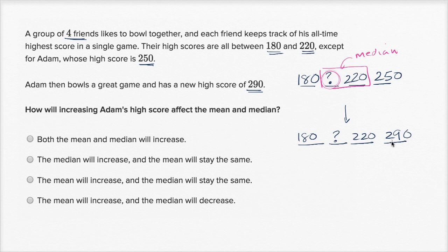Now, over here, after Adam has scored a new high score, how would we calculate the median? Well, we still have four numbers, and the middle two are still the same two middle numbers. Whatever this friend's highest score was, it hasn't changed. And so we're going to have the same median. It's going to be 220 plus question mark divided by two. So our median won't change.